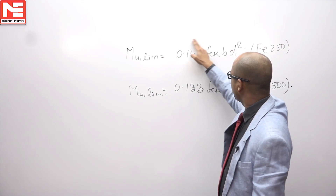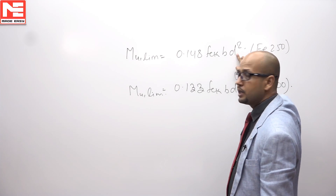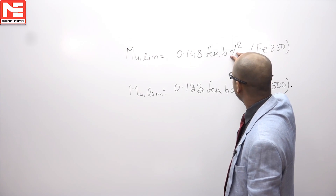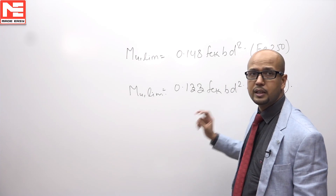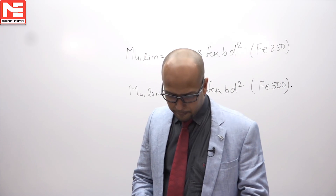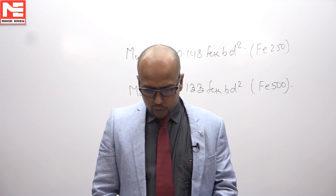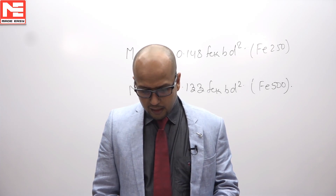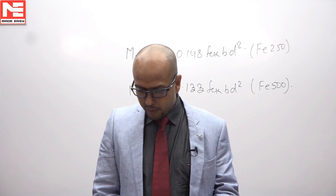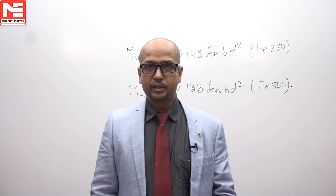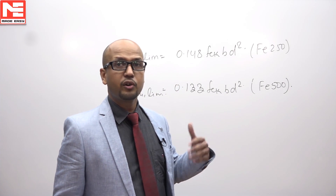A higher coefficient value gives a smaller value of depth. So for Fe 500 you will get a lesser value of depth compared to Fe 250. We can say from a deflection point of view, use of high tensile steel in RC beams results in a decrease in depth. This statement is wrong because we are getting results contrary to what is claimed.